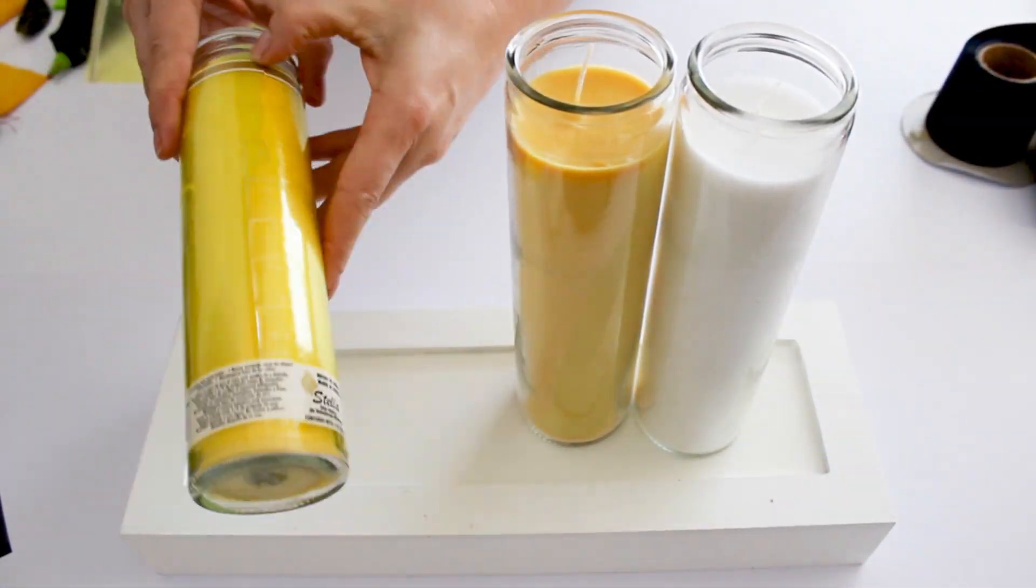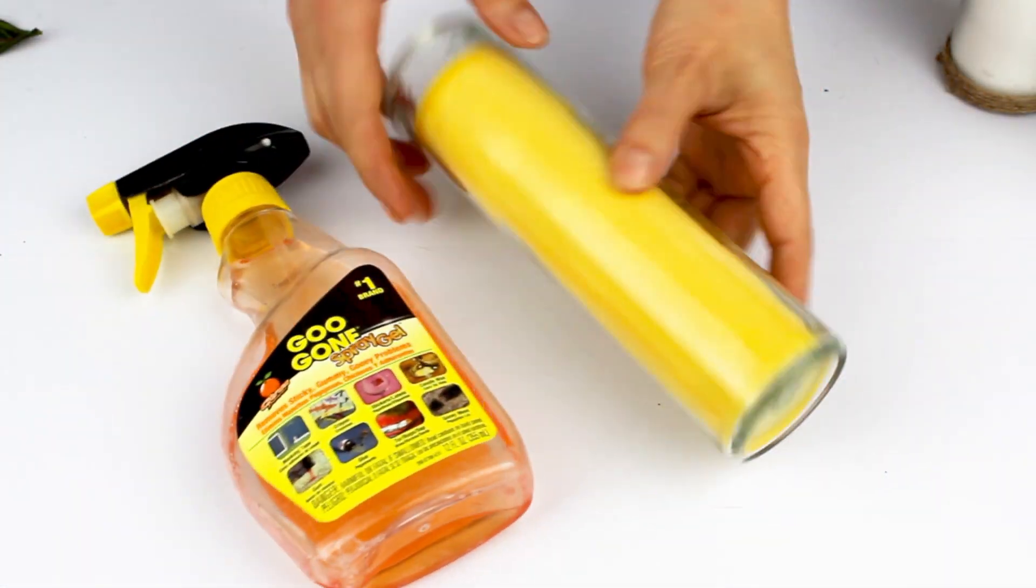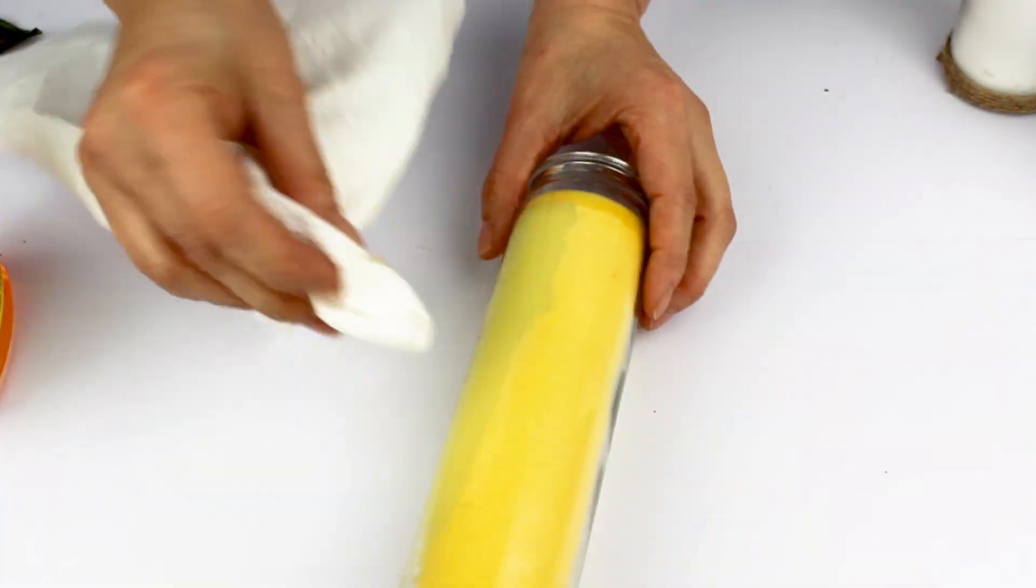We're going to start by removing the wrap and the glue from the jar. I like to use a glue gun and a paper towel to do this process.